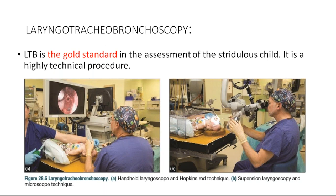Laryngotracheobronchoscopy is the gold standard in the assessment of the child with stridor. It is a highly technical procedure requiring general anesthesia, using a suspension laryngoscope or simple laryngoscope. The endoscope is advanced through the upper airway and findings are viewed on a monitor. In the case of a suspension laryngoscope with a microscope, two hands can be kept free, whereas with an endoscope only one hand is kept free.